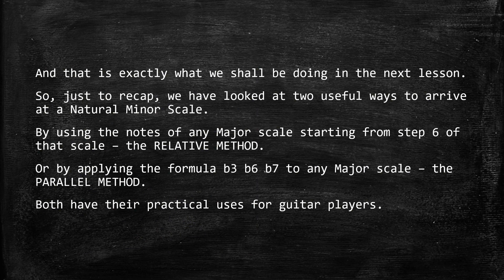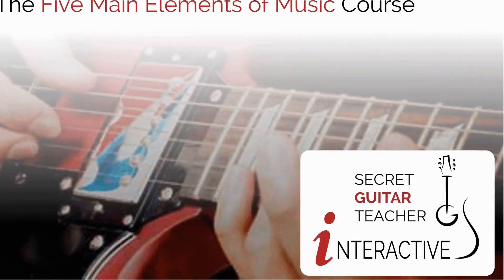That is exactly what we shall be doing in the next lesson. Just to recap, we've looked at two useful ways to arrive at a natural minor scale: by using the notes of any major scale starting from step six — the relative method — or by applying the formula flat three, flat six, flat seven to any major scale — the parallel method. Both have their practical uses for guitar players.